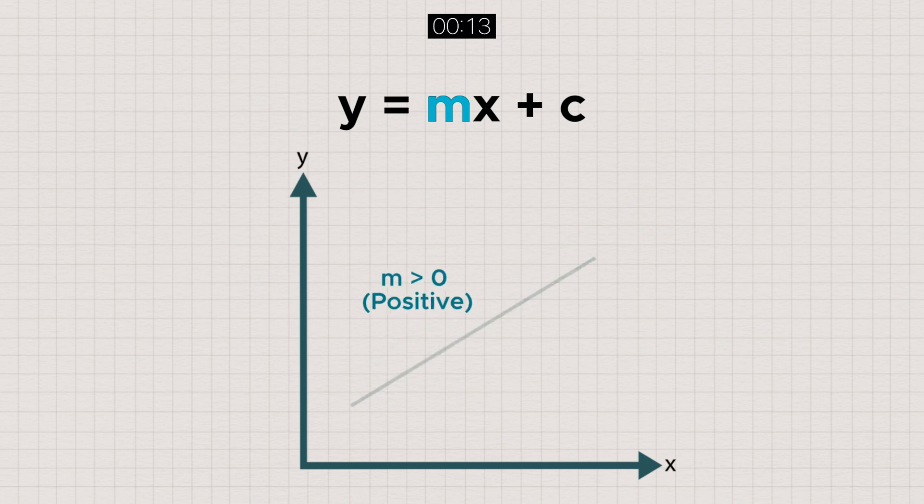The line will be upward sloping when m is positive, and downward sloping when m is negative. While the greater the absolute value of m, the steeper the line is.